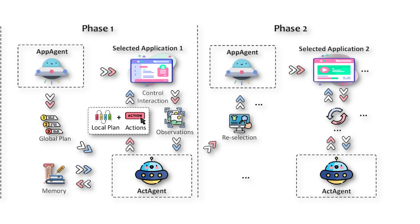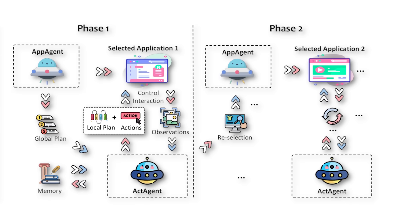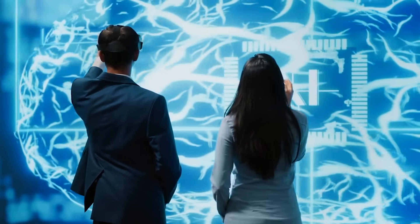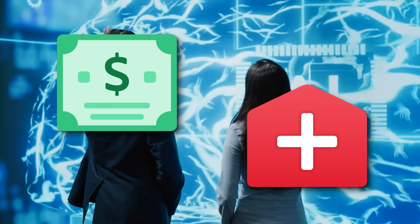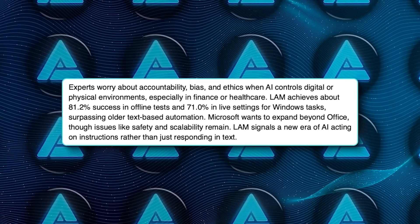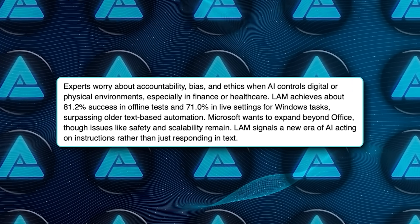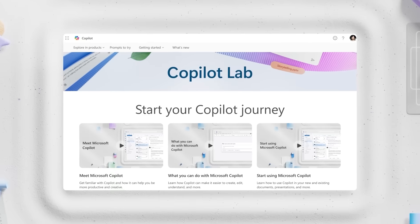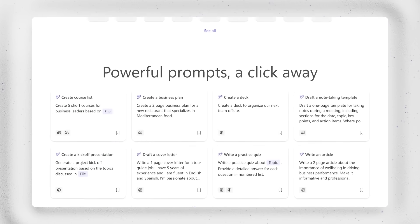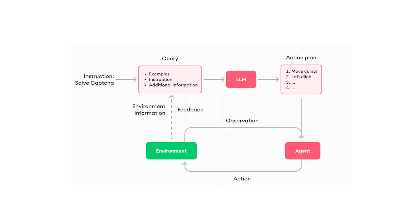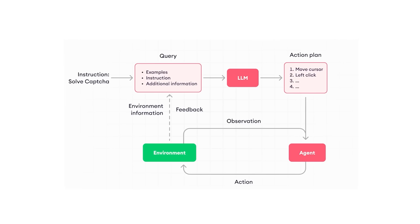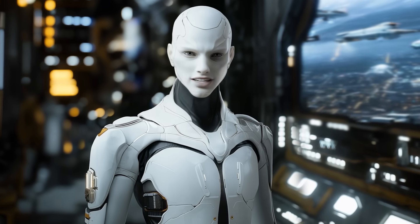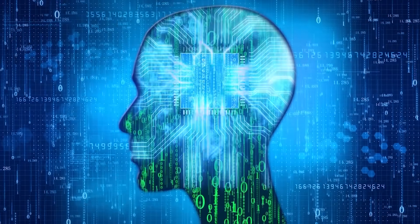It usually runs faster too, since it doesn't have to produce completely open-ended responses. Experts worry about accountability, bias, and ethics when AI controls digital or physical environments, especially in finance or healthcare. LAM achieves about 81% success in offline tests and 71% in live settings for Windows tasks, surpassing older text-based automation. Microsoft wants to expand beyond Office, though issues like safety and scalability remain. LAM signals a new era of AI acting on instructions rather than just responding in text. Do you think things are moving too fast, or is this all just part of normal AI progress? Thanks for watching, and I'll see you in the next video.